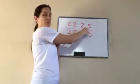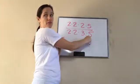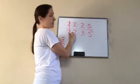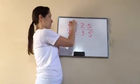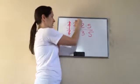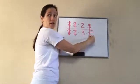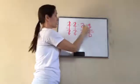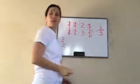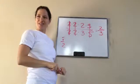Let's try another one. 2 times 2 times 2 times 5 over 2 times 2 times 3 times 5. 2 over 2 becomes 1 — you can just look at that, it means 1. So we get 1, 1, and the answer is 2 thirds. Isn't that cool?